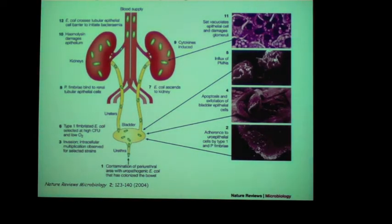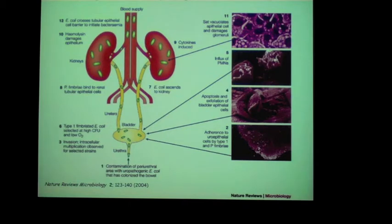The next slide shows photos of cells colonized by UPEC. On the bottom right, you can see adherence to epithelial cells by type 1 fimbriae. Above that, cells are beginning to exfoliate, and then above that neutrophils begin to move in as the host responds to infection. As infection moves up into the kidney, more damage occurs, and toxins can cause damage to the glomeruli and epithelial cells in that location.